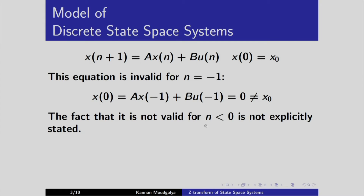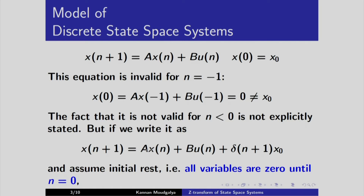The fact that it is not valid for n less than 0 is not explicitly stated in this equation. But if we write it with an added term and assume initial rest — that is, all variables are 0 until n = 0 — the problem is solved. Substituting n = -1: x(-1) becomes 0, u(-1) is also 0, and delta(0) = 1, so 1 × x₀ gives x(0) = x₀.